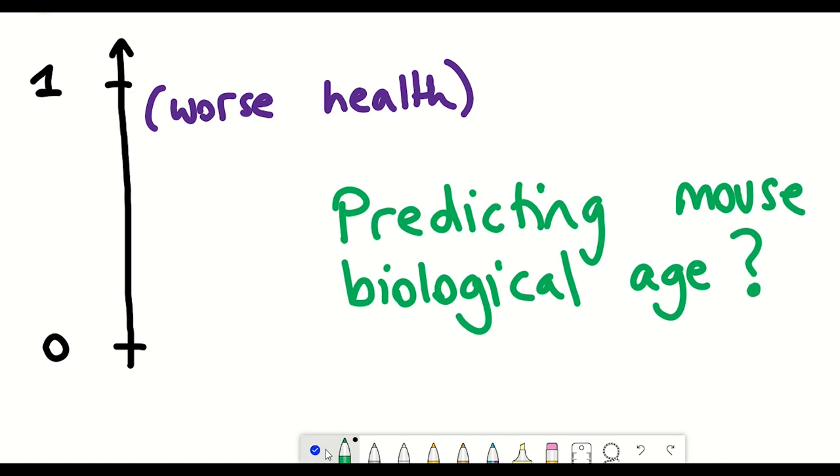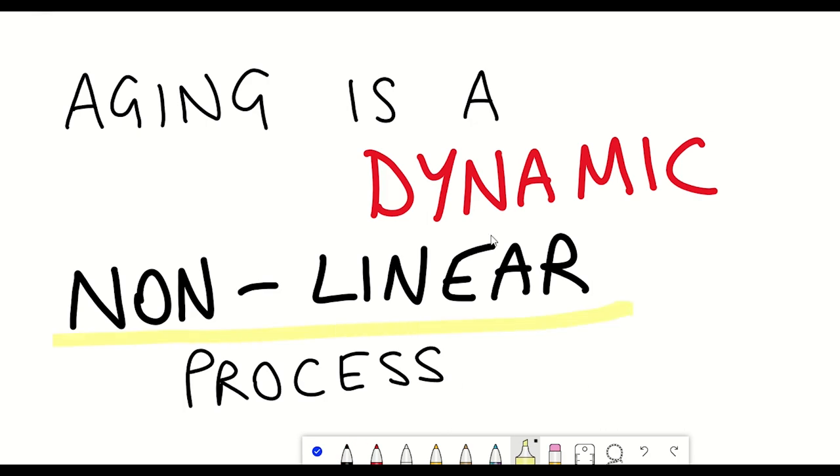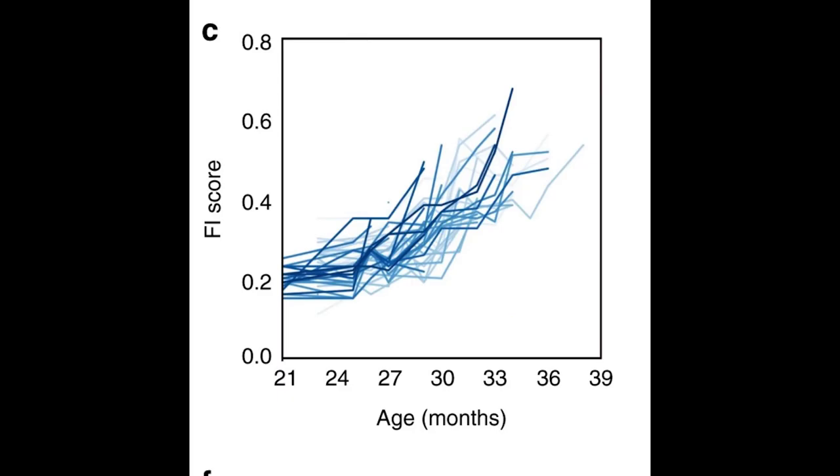So I said at the beginning, aging is dynamic and non-linear. And this is most evident in this figure here, where you can see the different frailty index measures of each of the different mice that they assessed in the study. And so we can see firstly that there is a general increase of the frailty index, which is expected. However, you can see that there's also much variability within the population.